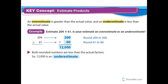Let's look at our key concept: estimate products. An overestimate is greater than the actual value, and an underestimate is less than the actual value. For example, estimate 204 times 61. They're rounding 204 to 200 and 61 to 60. Both rounded numbers are less than the actual factors, so 12,000 is an underestimate because both factors are less than the actual factors.